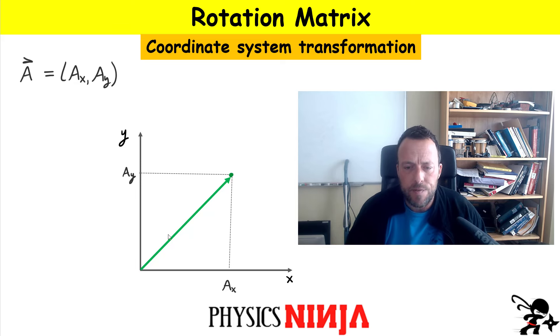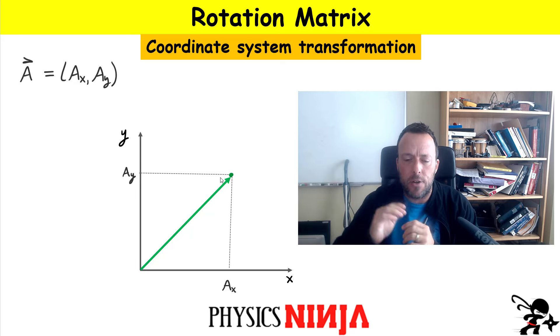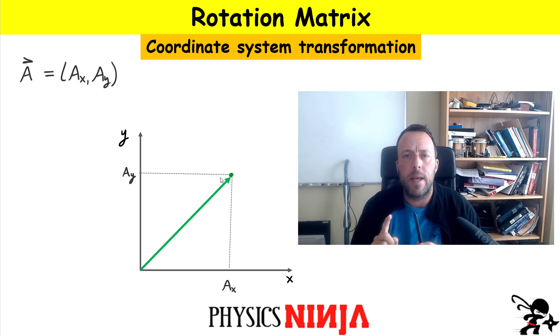So imagine we have this vector here, this green vector. It has a certain magnitude, and it has components AX and AY in the global coordinate system. And what if I have another coordinate system and I want to rotate it, for example, right?